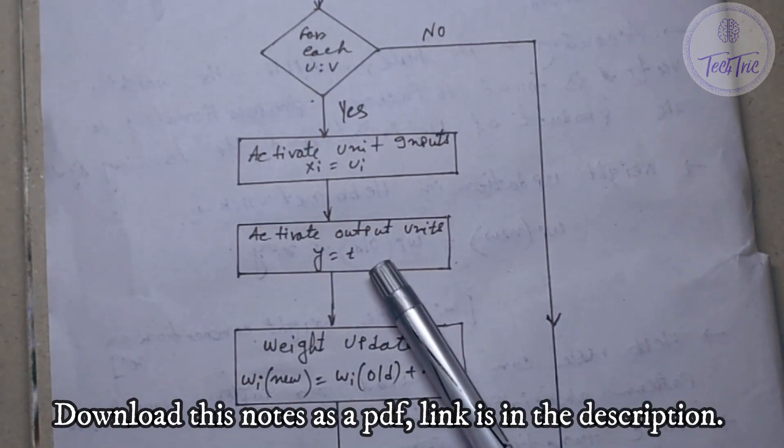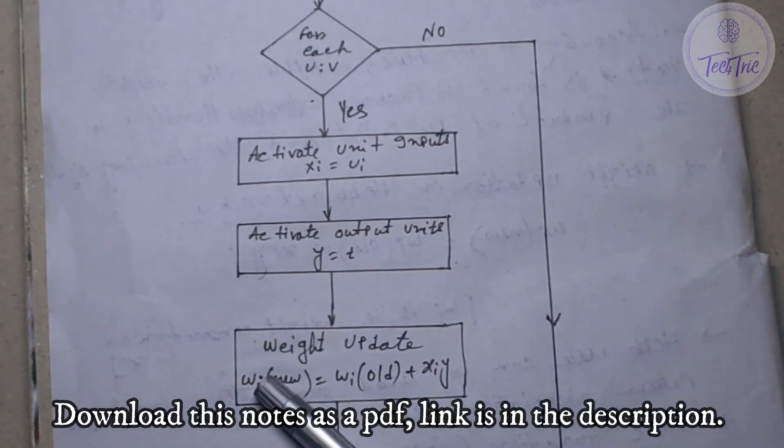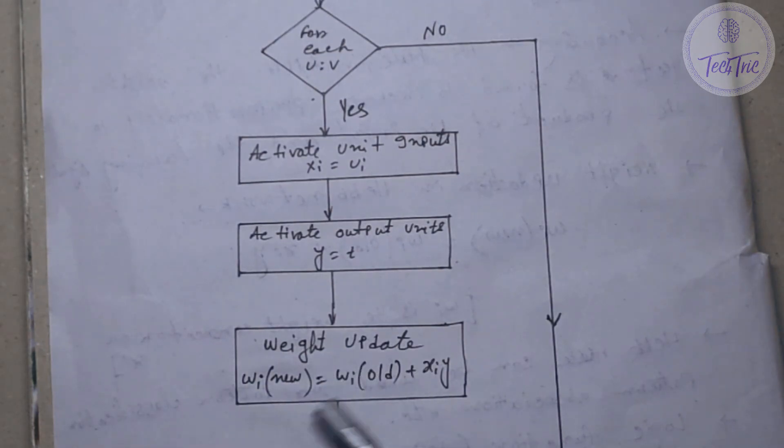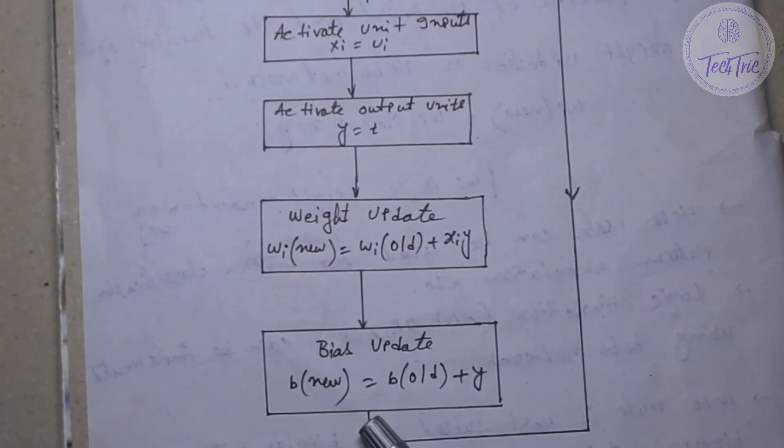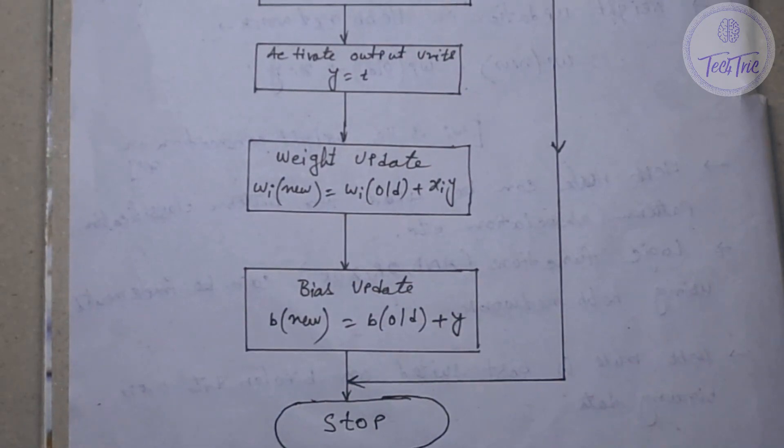This is how we can update the weights with this formula, and with this formula we can update the bias. And then stop. And if we get no, then the training will be stopped.